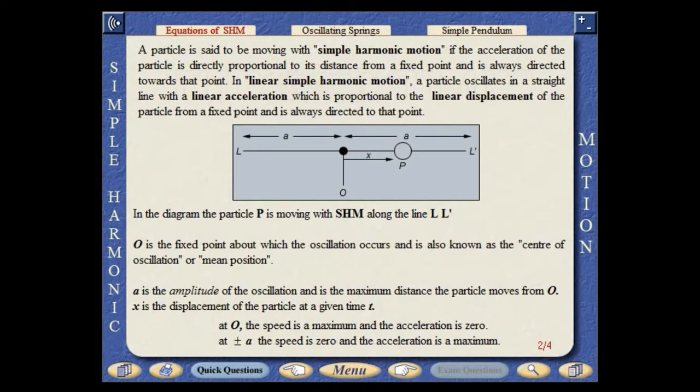In the diagram, O is the fixed point about which the oscillation occurs and is also known as the centre of oscillation or mean position. A is the amplitude of the oscillation and is the maximum distance the particle moves from O. X is the displacement of the particle at a given time, t.